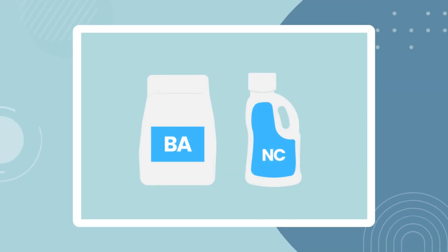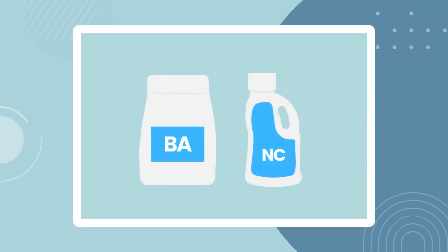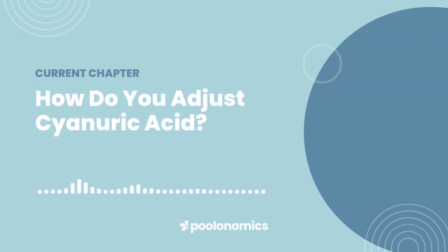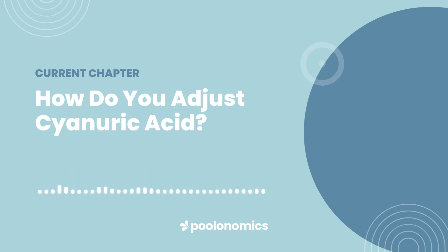While cyanuric acid reducers such as Bioactive or Natural Chemistry claim to lower CYA without draining your pool, these products have been met with very mixed reviews. In the end, the only reliable way to lower your cyanuric acid level is to drain some of your water and replace it with fresh, unstabilised water, which can be both expensive and time-consuming.